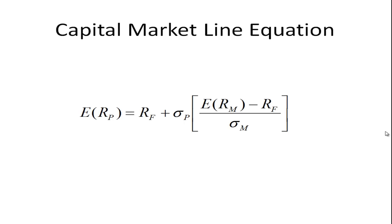The equation for the capital market line is that the expected return for some portfolio equals the risk-free rate — the intercept term — plus the standard deviation we choose for the portfolio multiplied by the slope of the capital market line, or the market price of risk.